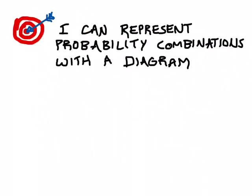Hi folks, this is Nat, and this is going to be a video lesson on how we can represent combinations of things with a diagram, which is going to be a really important skill in probability, because one of the things we're always wondering when calculating probability is how many things can happen.